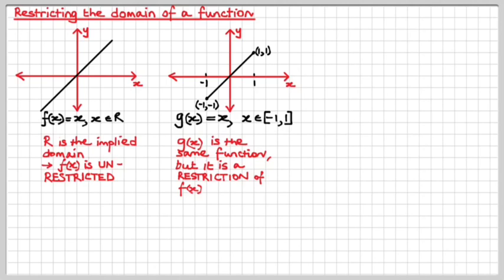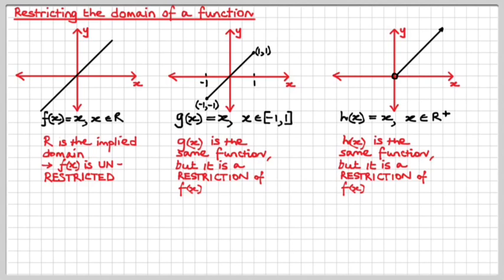And they will do this to you in exams. They do it all the time, so you better get used to the idea that they can restrict the domain on you. This one here is also the same basic function, but it's h of x equals x. We've called it something different because we've got a completely different domain again. This is where x is restricted to only positive reals, and you'll notice the open dot here because 0 is not included as a valid x value for this particular restricted function. So h is the same function as f and g except that it is a different form of restriction of f of x.